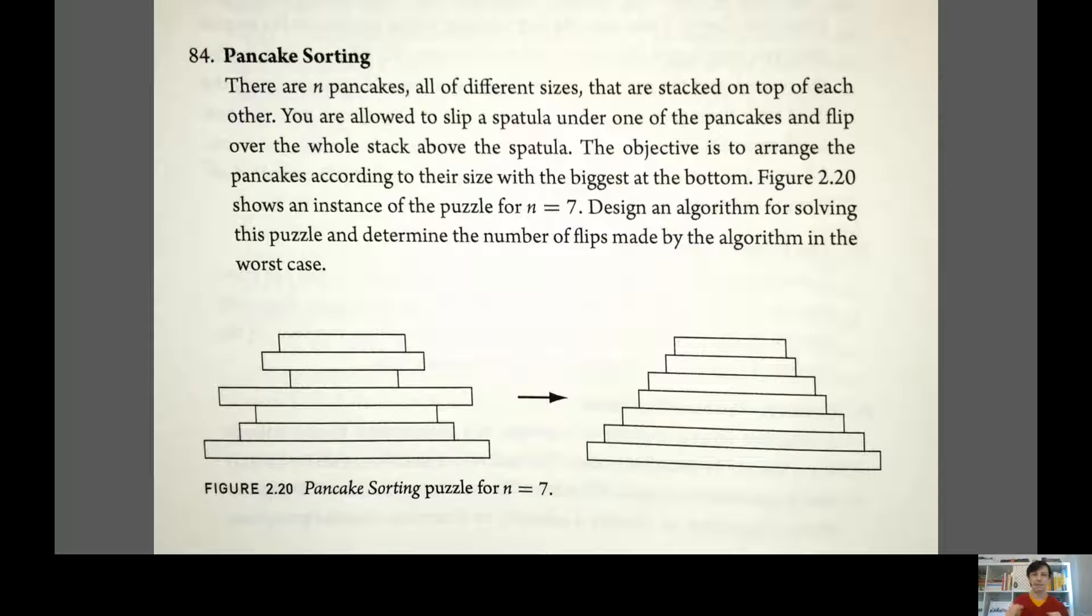The problem is: design an algorithm for solving this puzzle and determine the number of flips made by the algorithm in the worst case. That means you want to come up with an algorithm, a clearly defined procedure or set of instructions which will take any arrangement of pancakes you give it and always give you back a sorted stack of pancakes. You know that you start with n pancakes, but changing the starting arrangement will obviously change the number of steps your algorithm takes to sort. For every value of n, figure out which arrangement of the pancakes causes your algorithm to take the largest number of steps and figure out how many steps it will take in that worst case scenario.